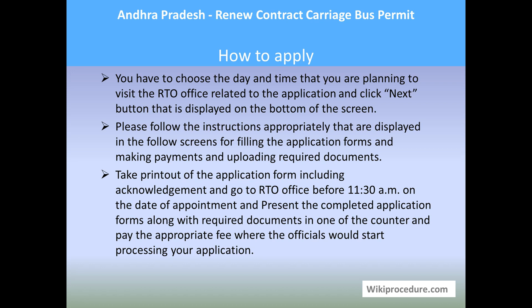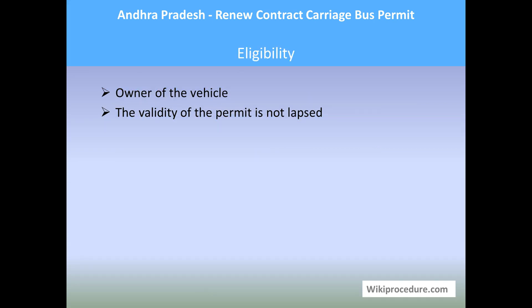Once the online application is done, you will get an acknowledgement. Take a printout of the acknowledgement and application form, and go to the RTO office on the set date before 11:30 AM to submit it to the officer there, who will mark the amount and the counter at which you need to pay. From here onwards, the in-person procedure will take care of issuing a renewed contract carriage bus permit.